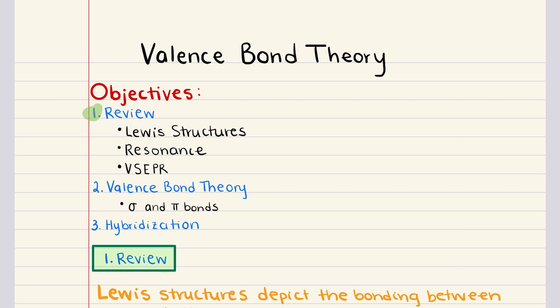We're going to cover the following objectives. We'll begin with a quick review of Lewis Structures, Resonance, and VSEPR theory, and highlight their limitations. Then we'll move into an introduction to valence bond theory, exploring how it describes the overlapping of atomic orbitals in covalent bonding, including constructive and destructive interference and sigma and pi bonds. Our final objective focuses on hybridization — sp3, sp2, and sp hybridization.